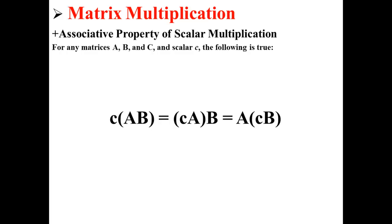Next, we have the associative property of scalar multiplication. For any matrices A, B, and C, and any scalar c, the following is true: lowercase c times A times B is equal to lowercase c times A times B, which is equal to A times lowercase c times B.